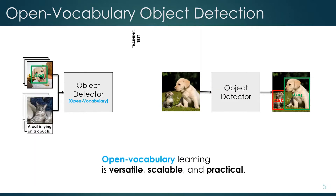In this paper we propose an alternative approach called Open Vocabulary Detection. The key idea is to augment the training data with image-caption pairs, which are much easier to collect than bounding box annotations. So if some categories don't have any annotation, like cat, we can still learn how they look using image-caption pairs and then detect them without any annotation.